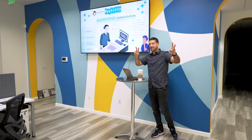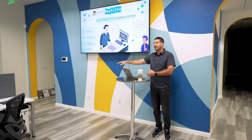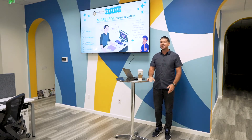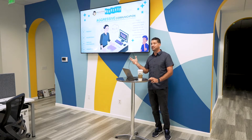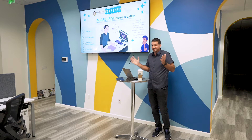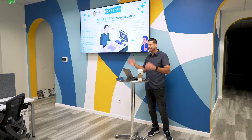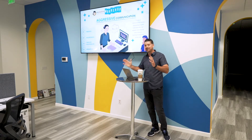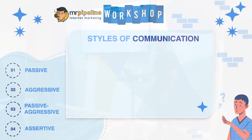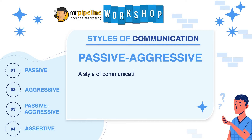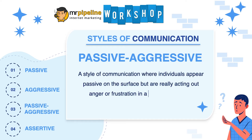You guys see the difference in the two styles? Very passive with my response towards John but certainly aggressive towards Kaylee. For neither one of those types of communication is it beneficial for anybody. Kaylee left feeling weird — she's like what's going on, I'm just trying to help you. John wasn't sure what was happening either. So the next style is literally a combination of both and it leaves the other person in an even more uncomfortable position. Passive aggressive is defined as a style where individuals appear passive on the surface but are really acting out anger or frustration in a subtle, indirect, or behind-the-scenes way.